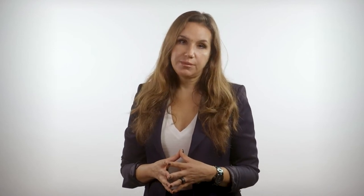Continuing with wages, ICP data on the compensation of public sector workers are used by the World Bank's Worldwide Bureaucracy Indicators database to help policymakers analyze the competitiveness of wages and the personnel dimensions of state capability. The spider chart here shows these data being used to calculate pay compression ratios in public sector occupations by country income group.